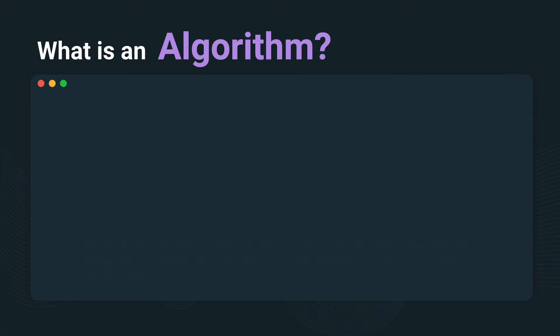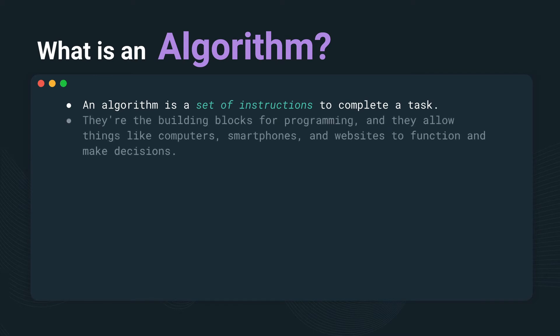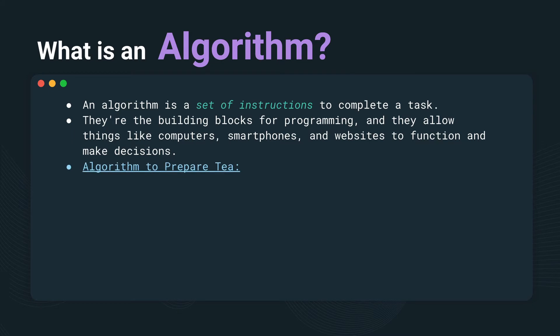Let's talk about what an algorithm is. An algorithm is nothing but certain steps you take to perform a task — they're just a set of instructions that you use to complete a task. They are the building blocks of programming and they allow things like computers, smartphones, and websites to function and make decisions.